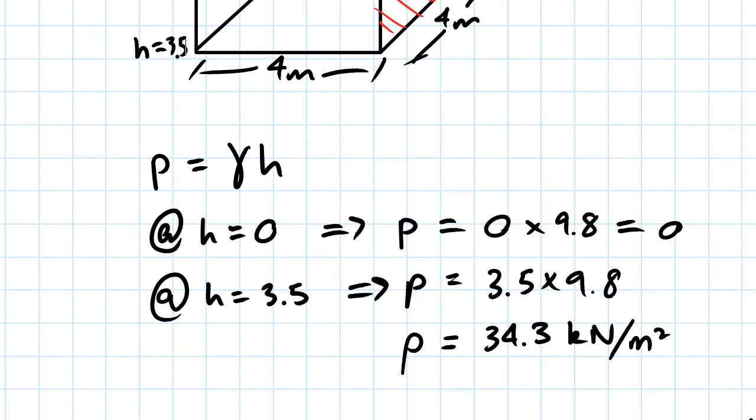So at h equals 0, we get a gauge pressure of 0 because there is no water on top of it. And at h equals 3.5, we get a gauge pressure of 34.3 kilonewtons per meter squared.